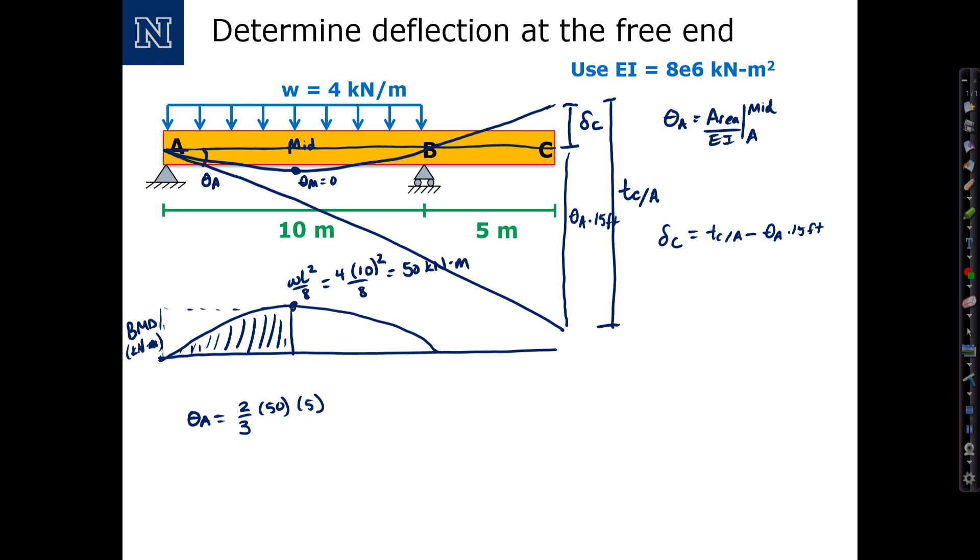And that computes to 166.67, units are kilonewton meters squared, and then we'll need to divide that by EI, and I'm just going to leave it like that at present.